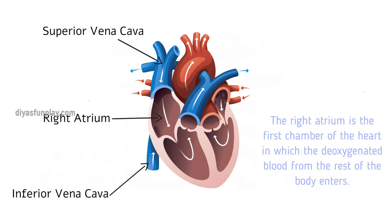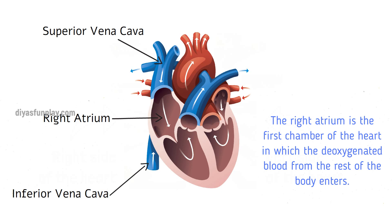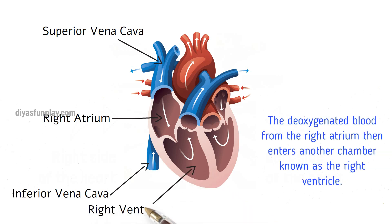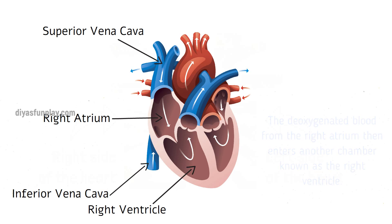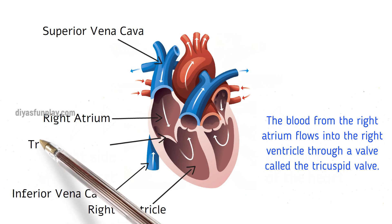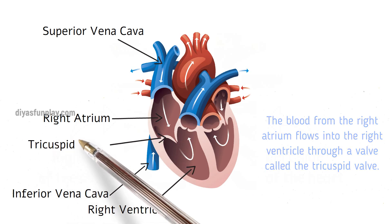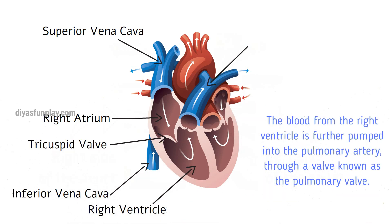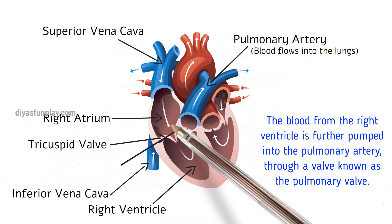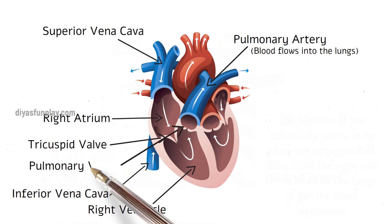The right atrium is the first chamber of the heart where deoxygenated blood from the rest of the body enters. This blood then flows into the right ventricle through a valve called the tricuspid valve. The blood from the right ventricle is further pumped into the pulmonary artery through the pulmonary valve.